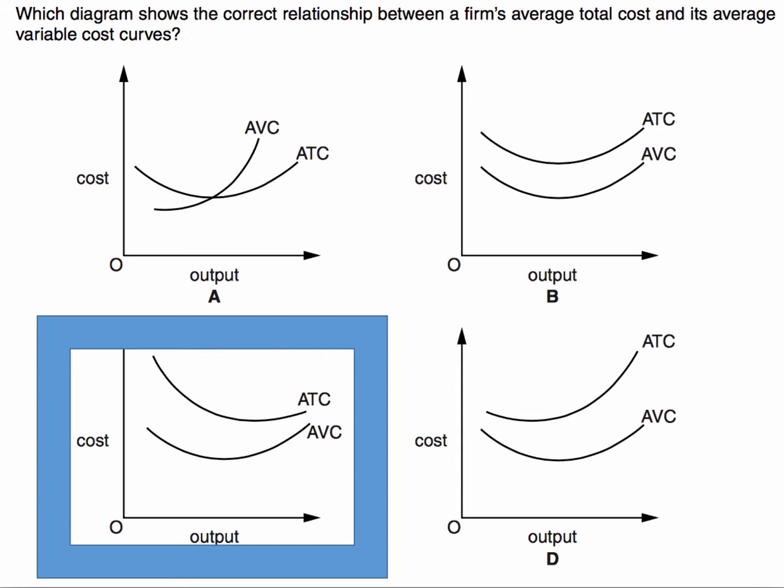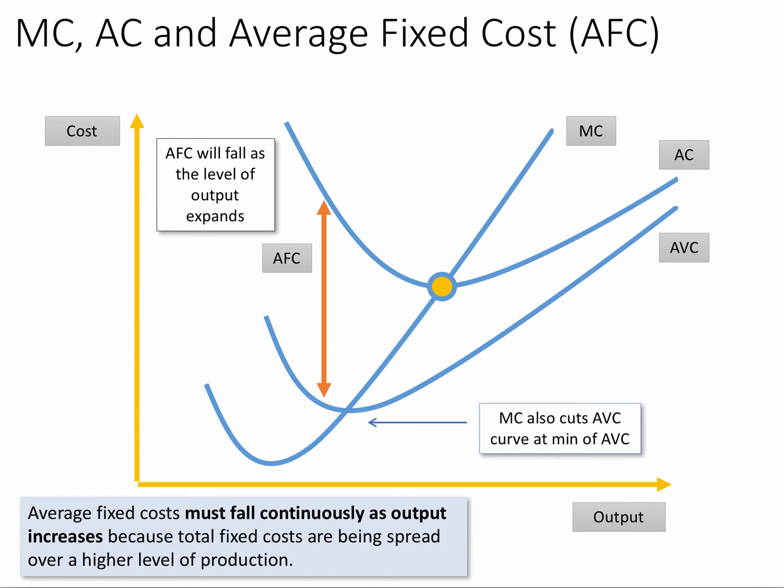If you're familiar and confident with cost curves and cost concepts, here we go. The gap between AC and AVC is average fixed cost, and average fixed cost must fall continuously as output increases